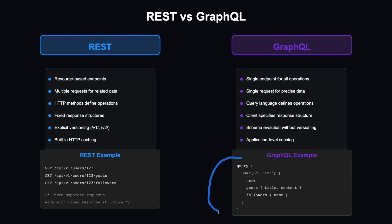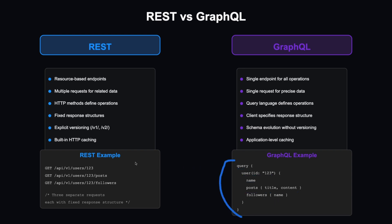In a GraphQL query, you start with the query keyword and define exactly what you need. For example: user with id123, their name, their posts with only title and content, and their followers with only names. This single request replaces three separate REST requests, making it more efficient.